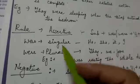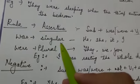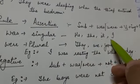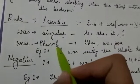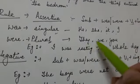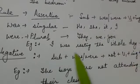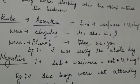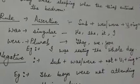Let's discuss the use of 'was' and 'were'. 'Was' is used with singular subjects — for example: he, she, it, or I. 'Were' is used with plural subjects — for example: they, we, you. For example, 'I was resting the whole day' — I ke saath hum ne kya use kiya? Was. Mein pura din rest kar raha tha. And 'They were resting the whole day.'